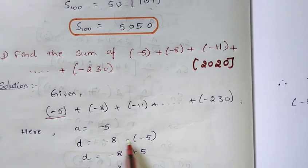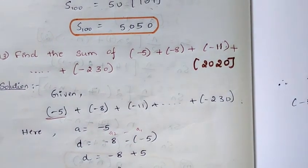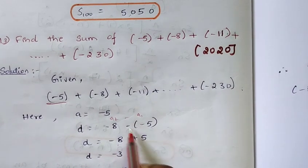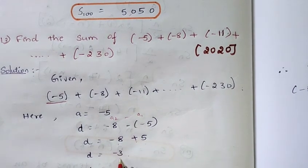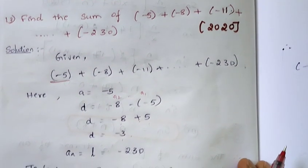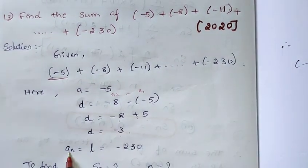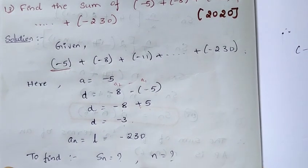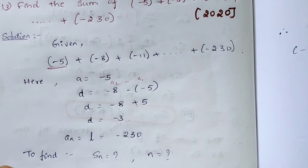The first term a is equal to -5. The common difference d is equal to a2 minus a1, that is -8 minus (-5), which gives -8 plus 5 equals -3. So d = -3. The last term, that is the nth term, An = L = -230. We need to find the sum Sn of the given series.